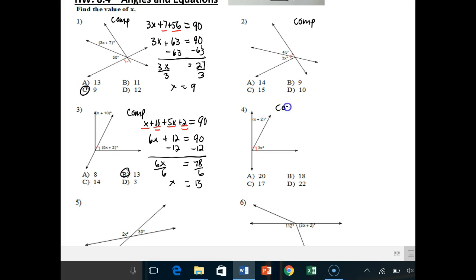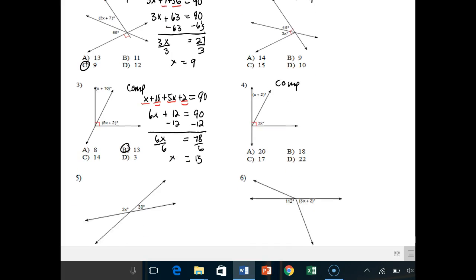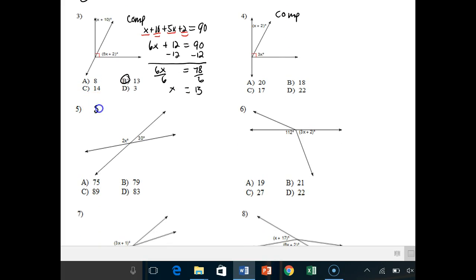Number four's relationship is also complementary. Number five, we have finally a supplementary relationship. So that means 2x plus 30 has to add up to 180 degrees because of the supplementary relationship between the two angles. I subtract 30 from both sides. I get 2x is equal to 150. I divide by 2 and I get x is equal to 75.